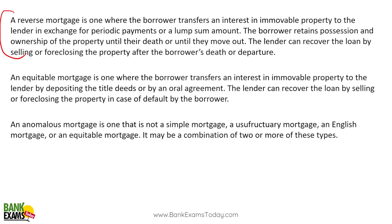Reverse mortgage is used mostly by senior citizens. For example, a 60-year-old person has a house worth one crore rupees but needs monthly income — say 50,000 rupees — to survive. They can do a 20-year reverse mortgage: the bank pays them every month. At the end of the term, or if they pass away, legal heirs can pay the bank's dues and reclaim the property, or the bank sells it to recover the money.